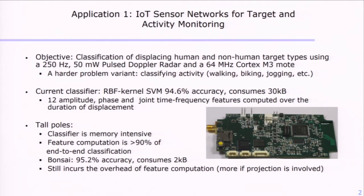It currently has 94.6% accuracy for object classification. However, it comes with huge overhead: storing the support vectors alone consumes 30 kilobytes, and feature computation consumes more than 90% of the end-to-end classification cycle.